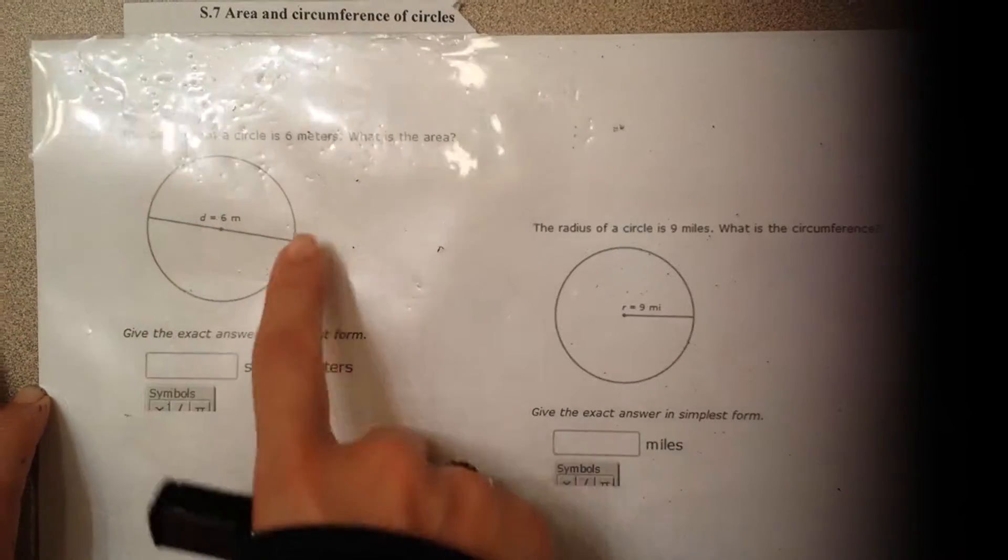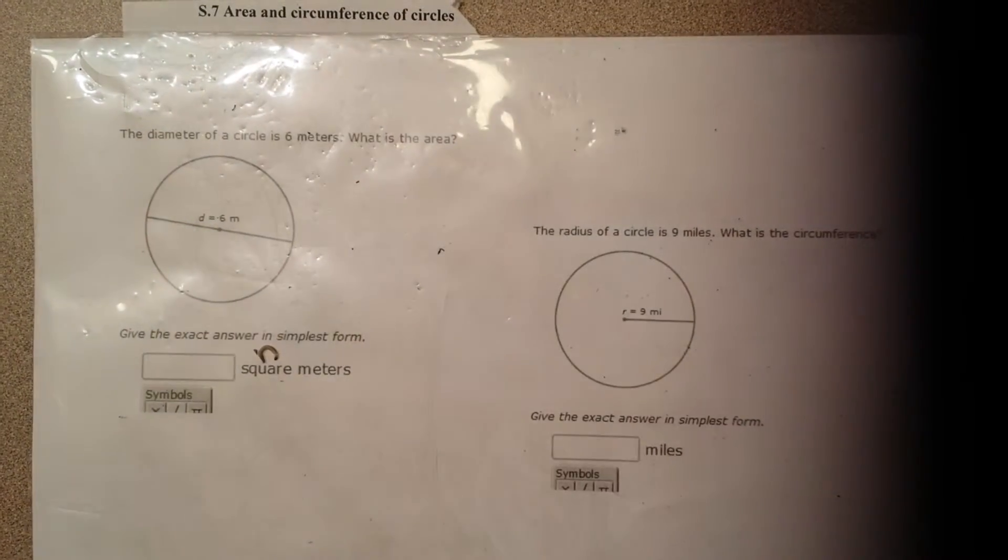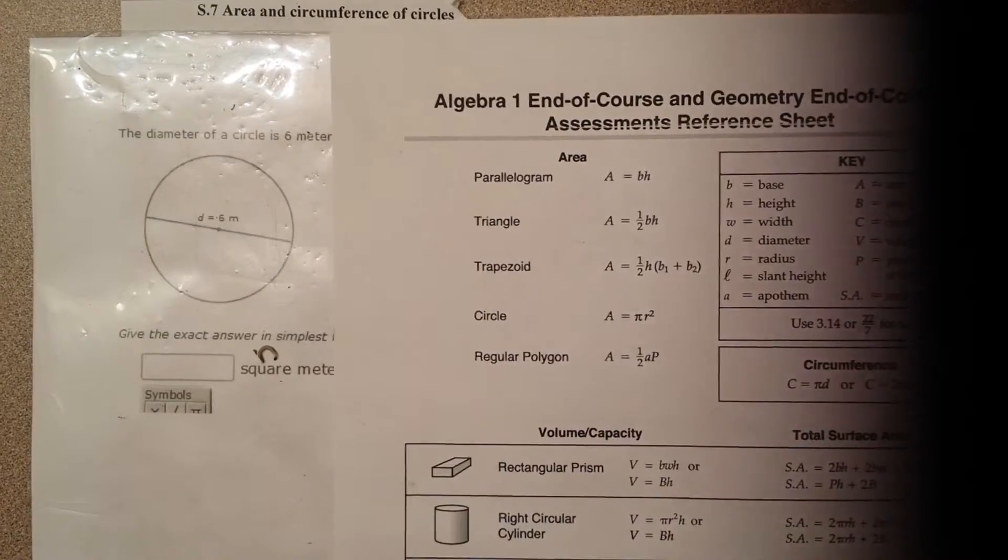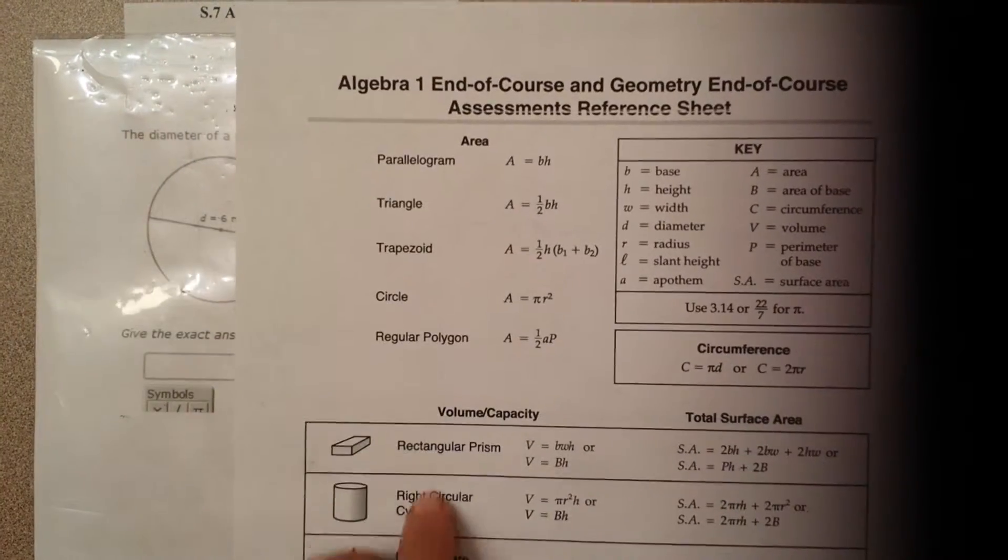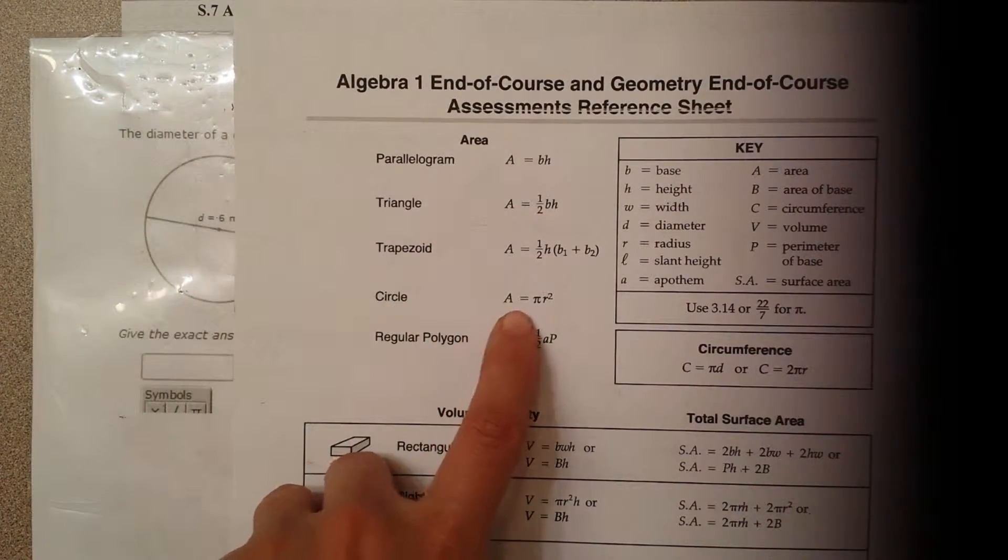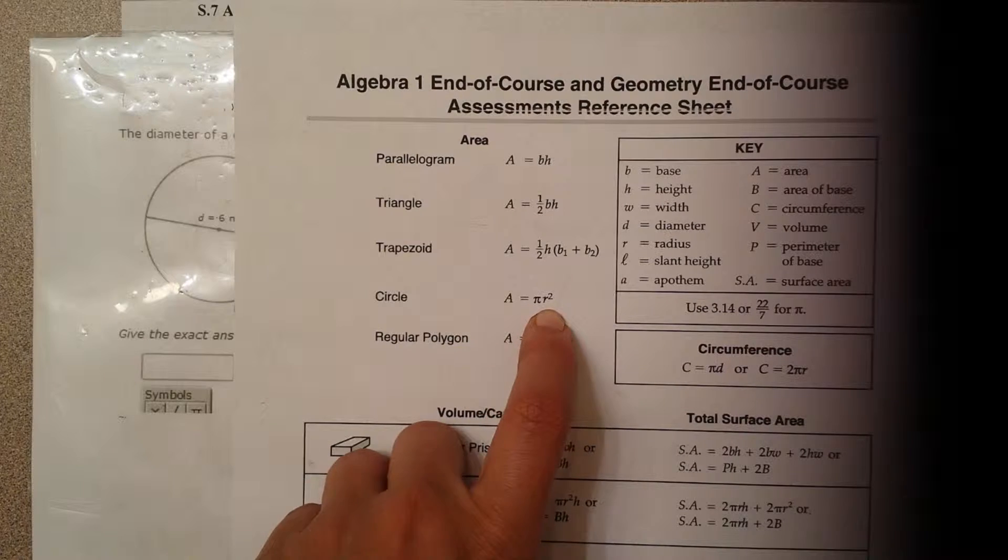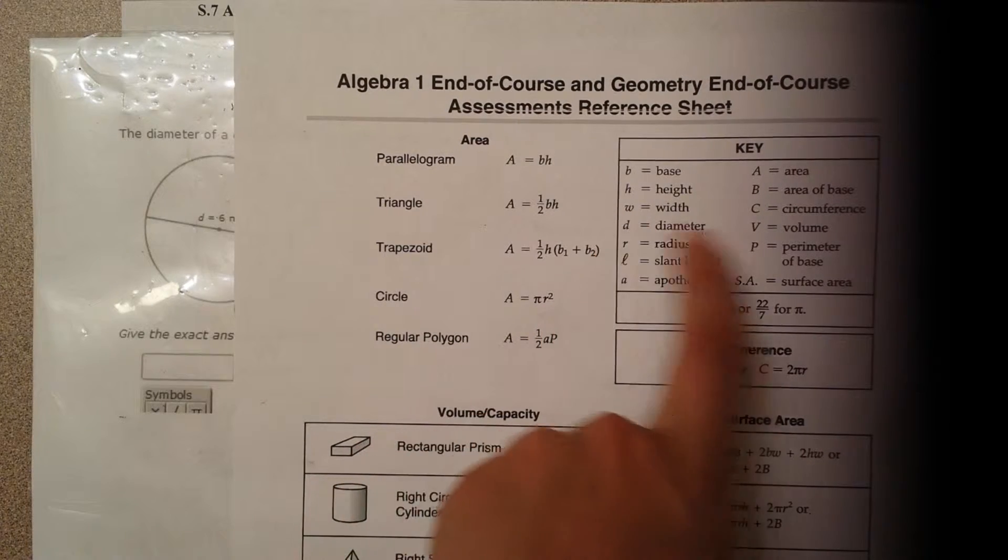Again, diameter is the whole length. What is the area? So take your reference sheet once again and you're looking for what is the area? So you're looking for area of a circle. Area of a circle is pi r squared. If you don't remember what these symbols mean, you just simply can look at the key and see.